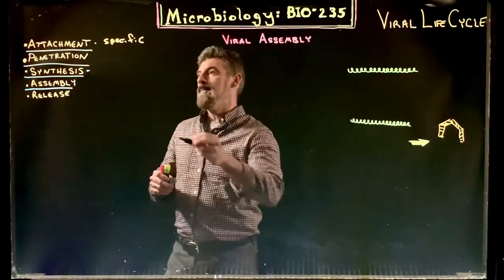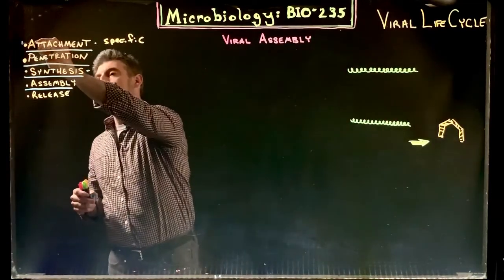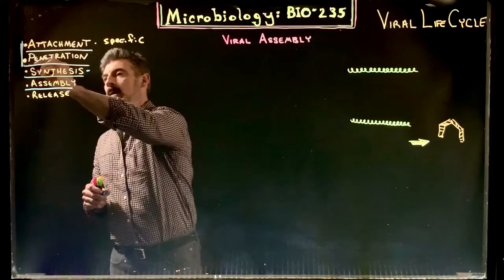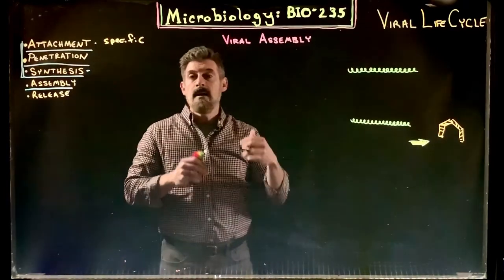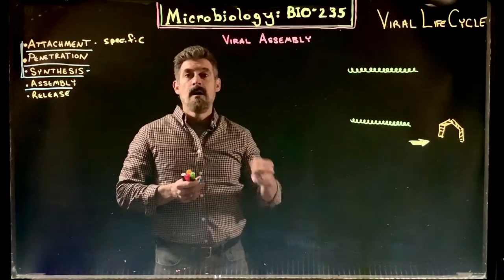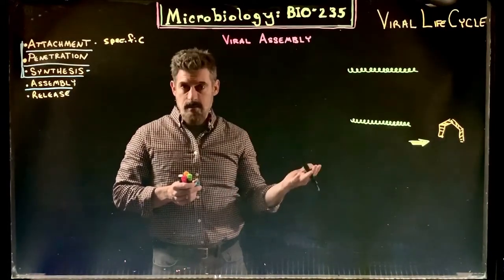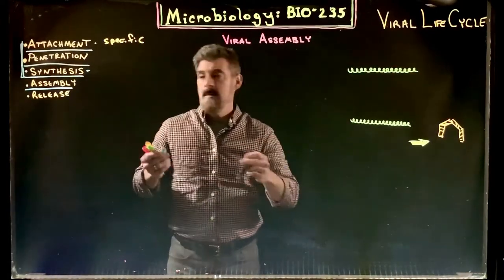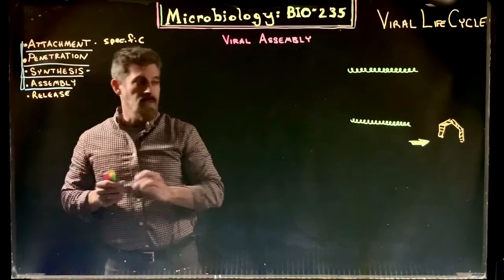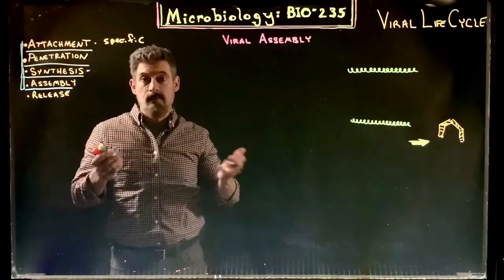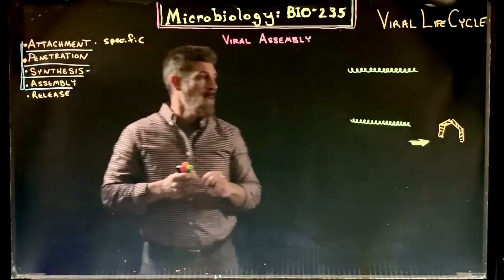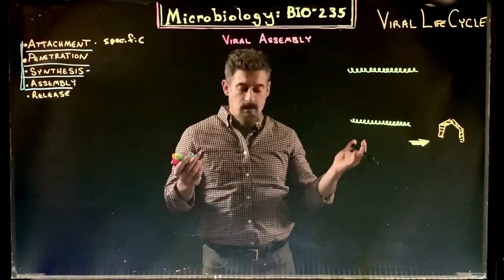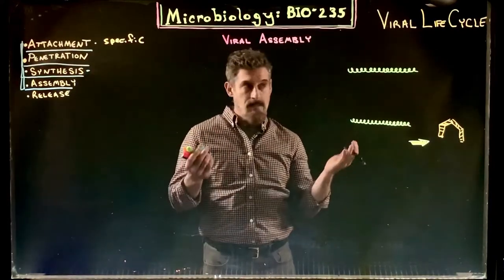For the viral life cycle, so far we've gone over the basics of attachment and penetration of a viral particle into a cell, and then once the viral particle has gotten into the cell, how the synthesis begins of the genome of the virus and the viral proteins are manufactured to make the capsid. Now we're going to look at the next step, which would be assembly. It's going to be different for a variety of different types of viruses, with unique proteins involved, but we're going to go over just the basic mechanisms.